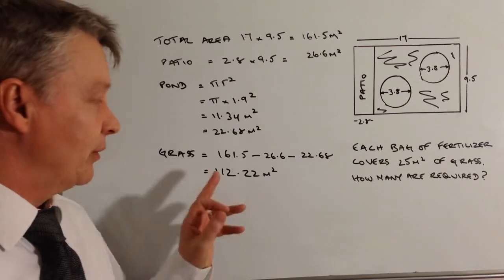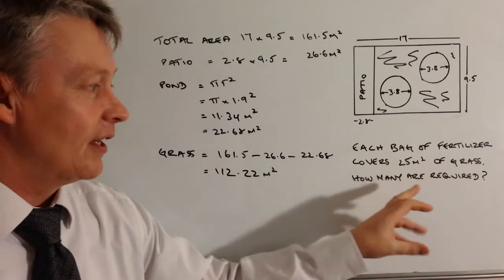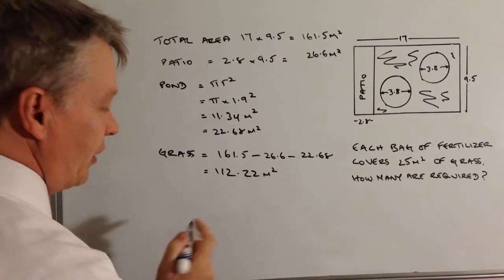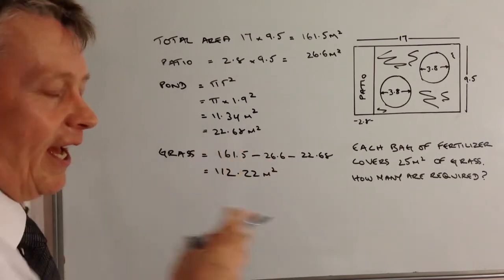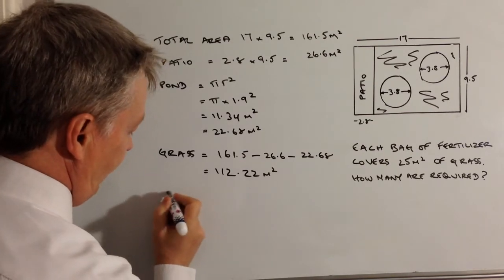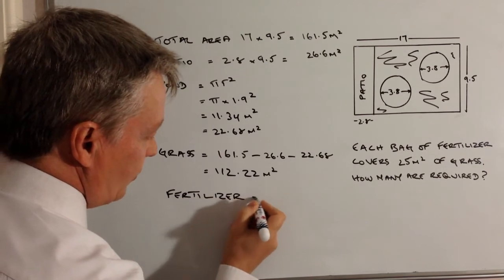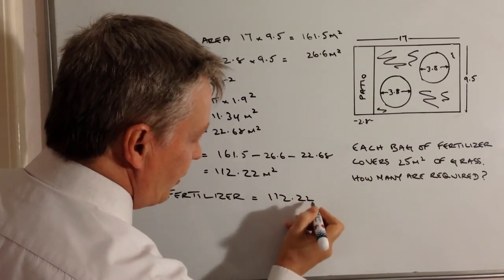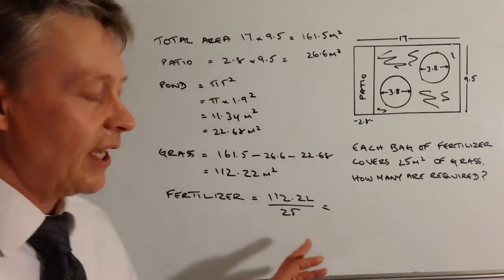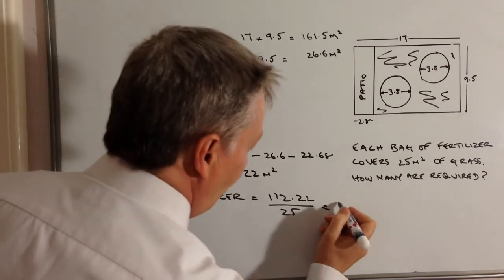Okay, and then it's really just a case of plugging that information into this because each bag of fertilizer will cover 25 meters squared of grass. Well, we've got 112.22, so therefore how many lots of 25 are there in that? So the fertilizer, okay, is going to be equal to 112.22, I'm going to write as a fraction divided by 25.